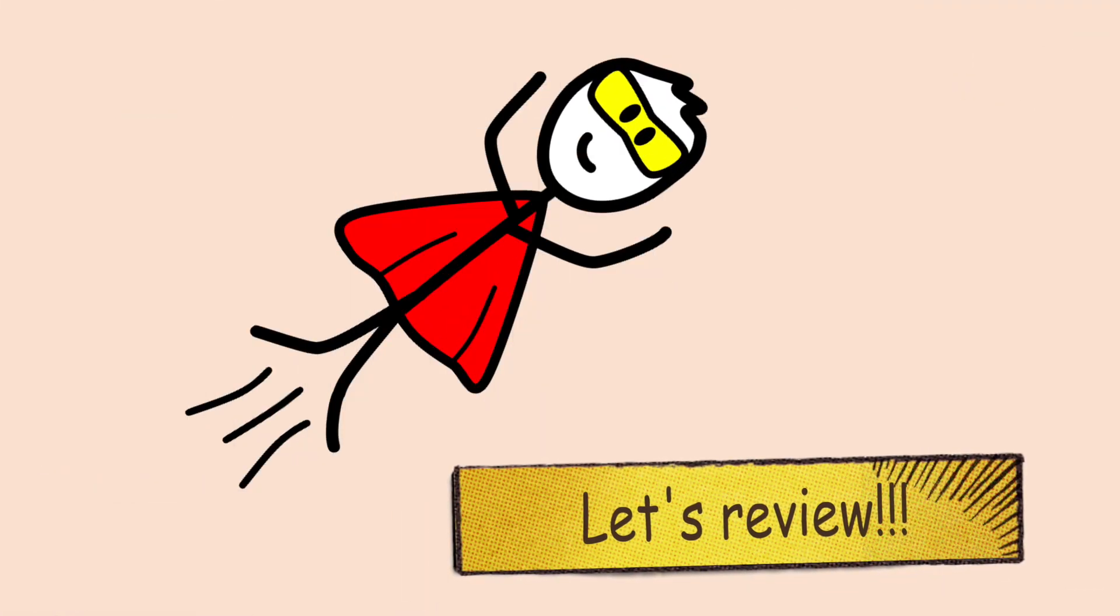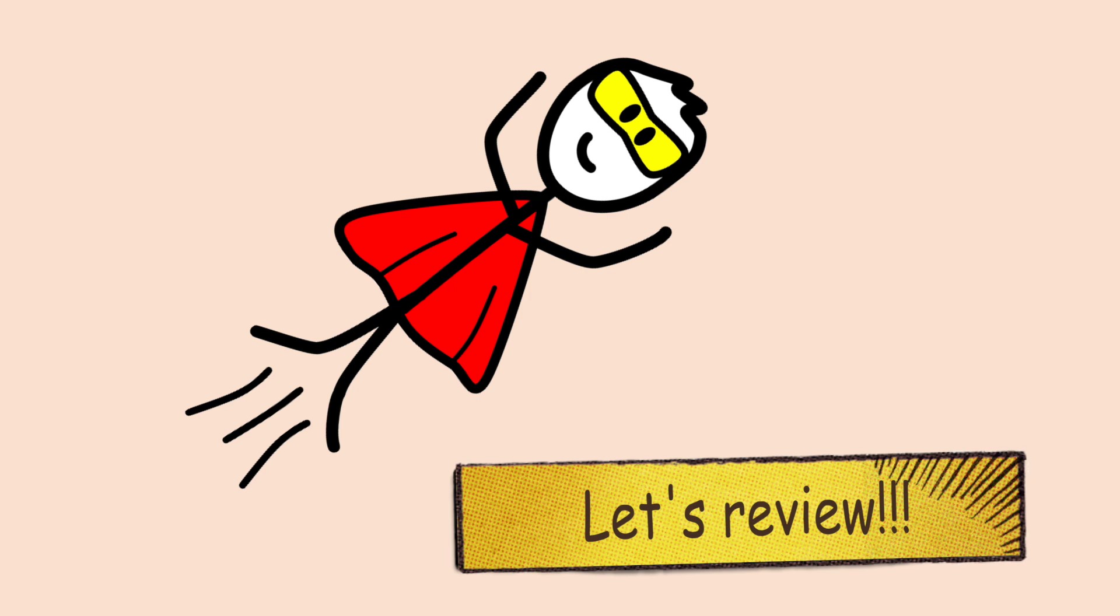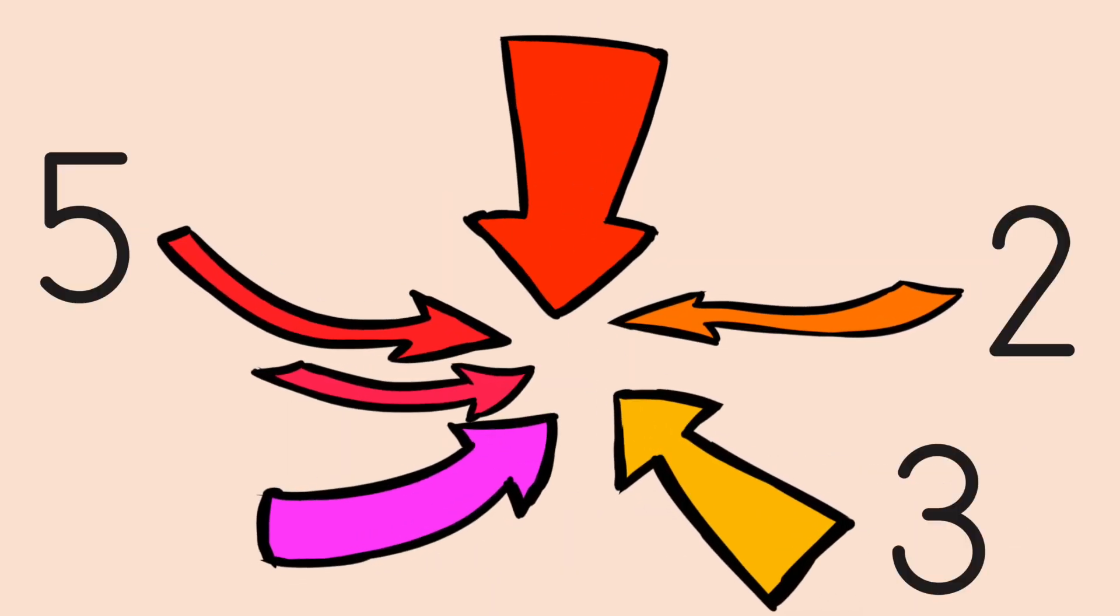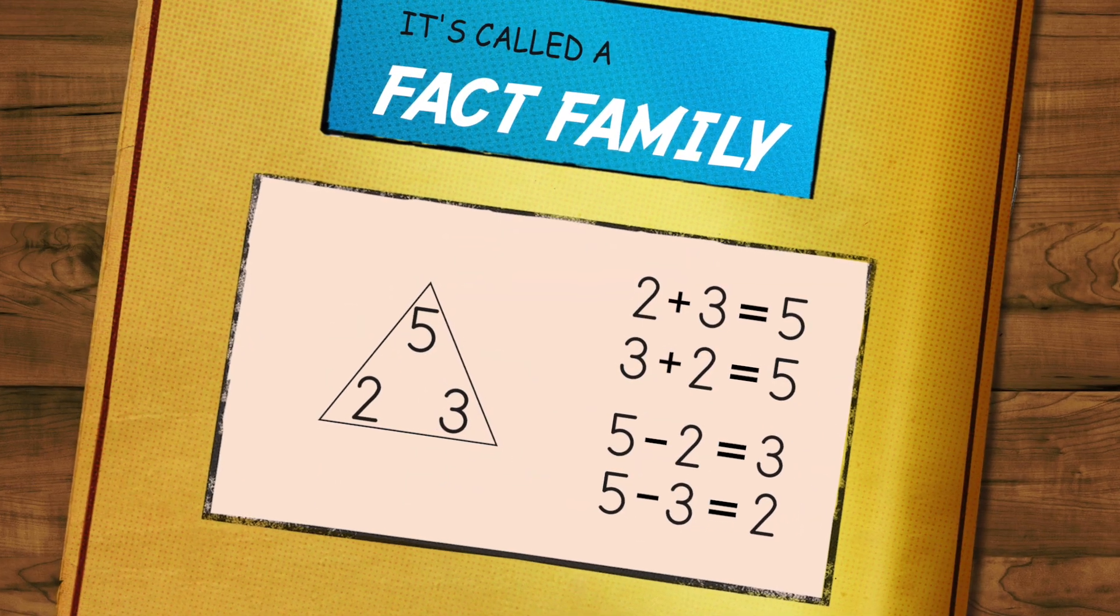So, let's review what Super Math Person discovered. First, a group of related numbers that can make addition and subtraction sentences is called a fact family.